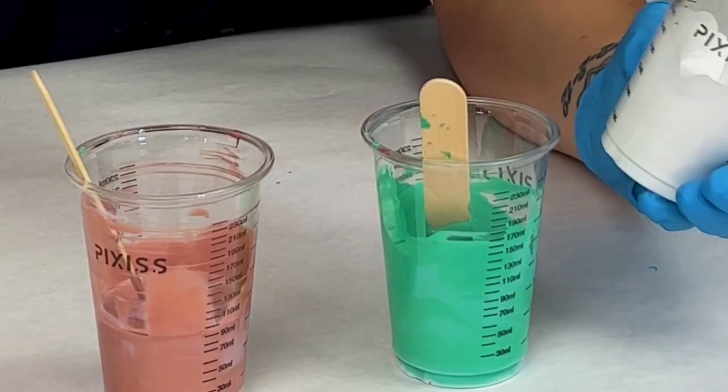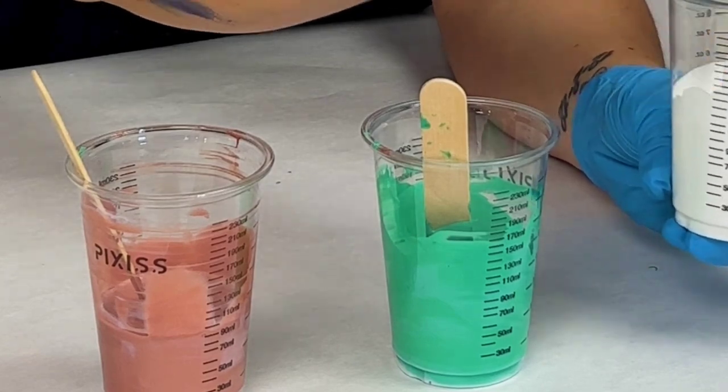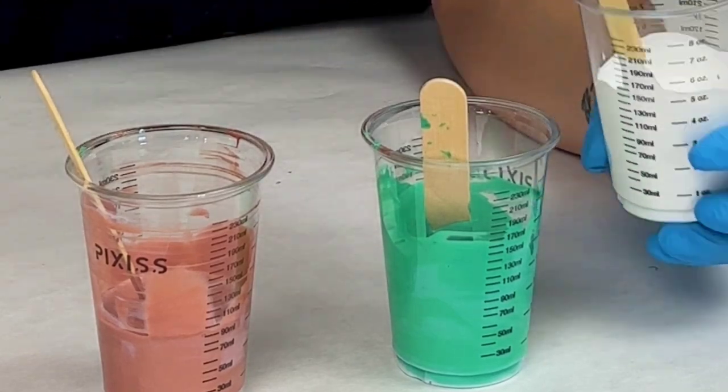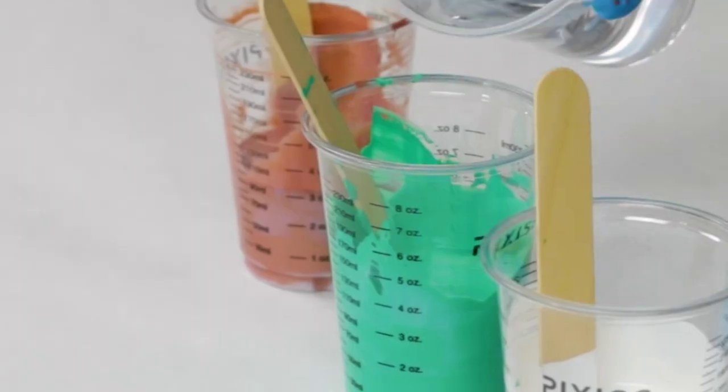These second two paints, the Soho and the Amsterdam, were both pretty thick, so I added just a little bit of water to each of them.